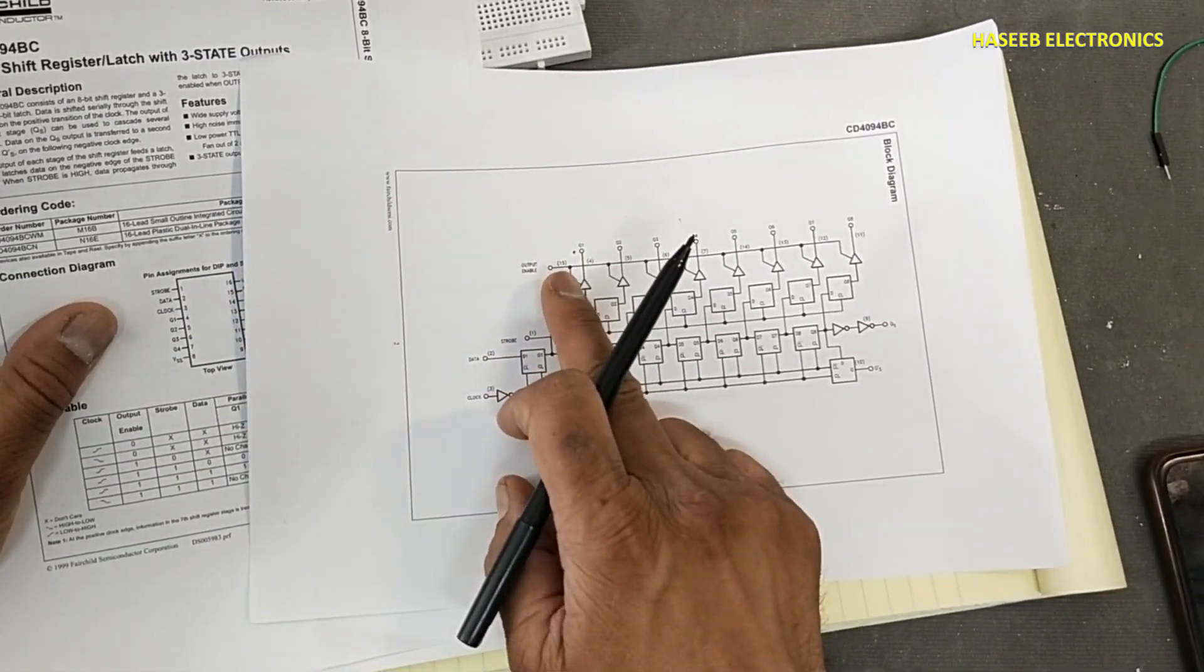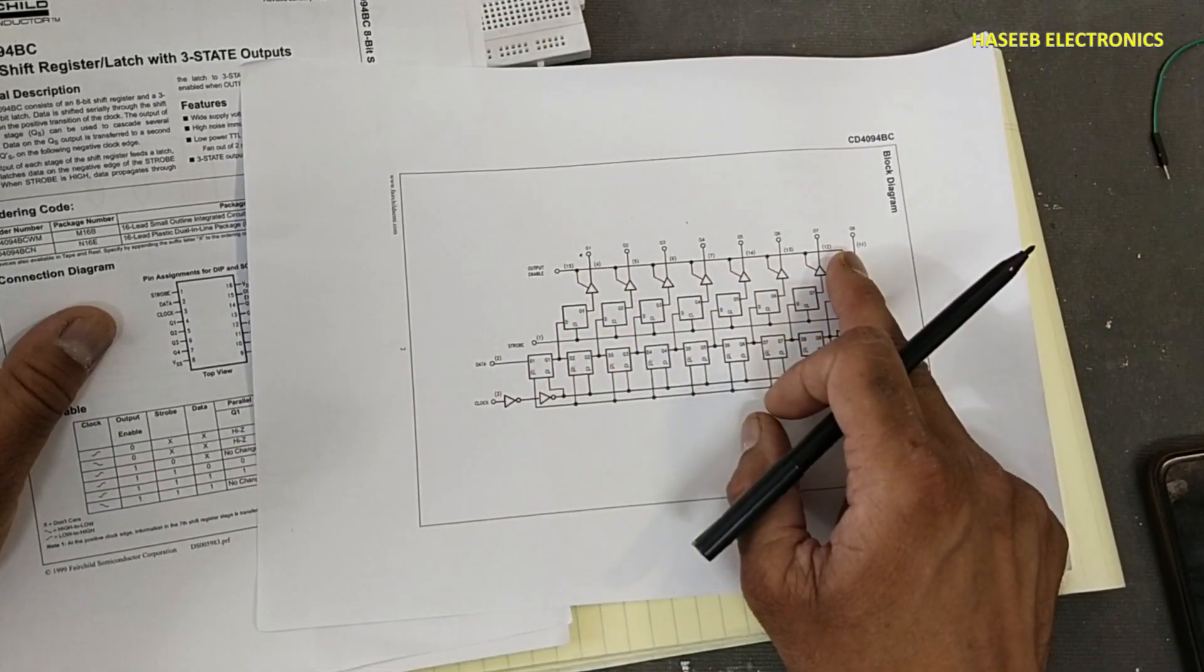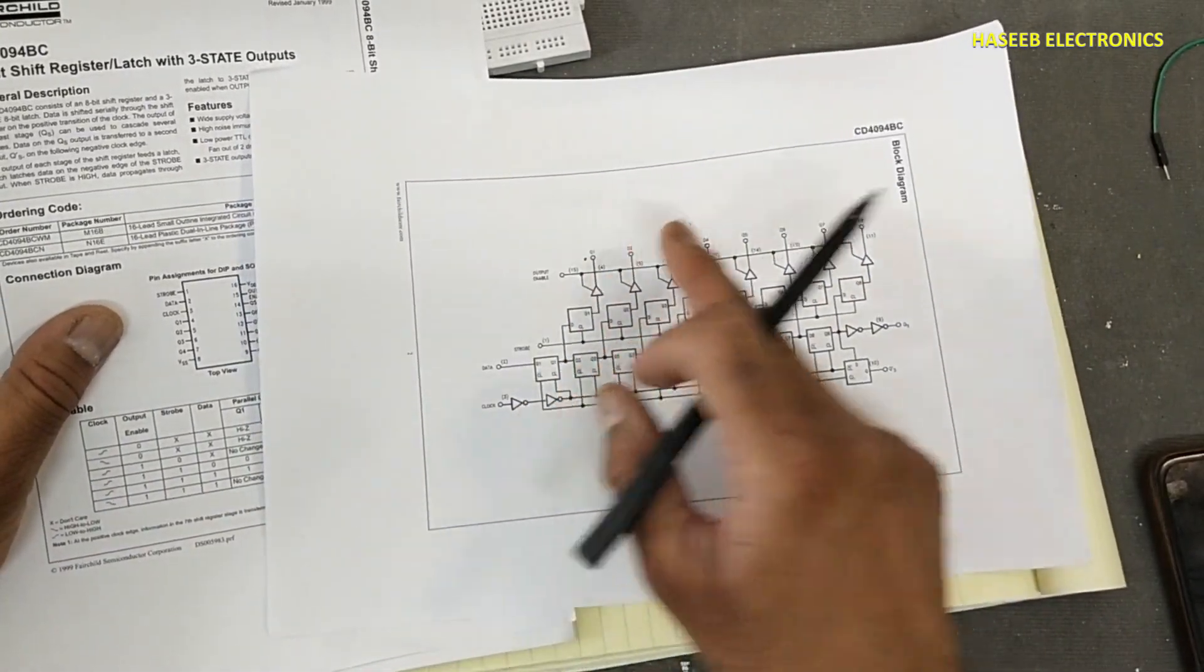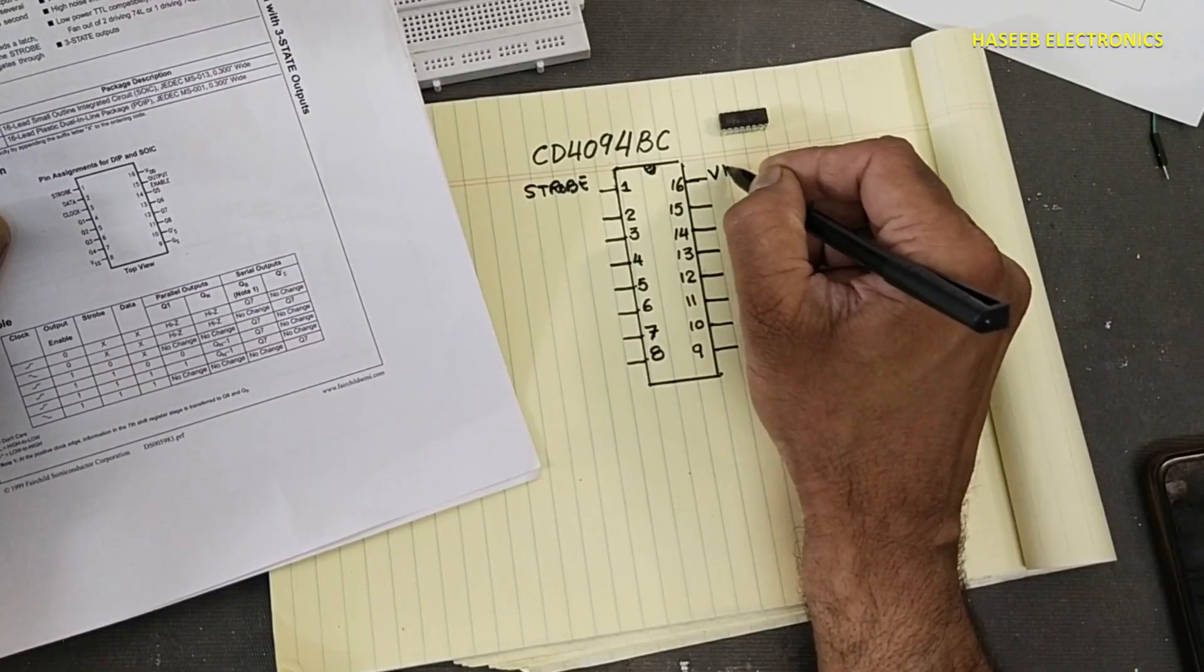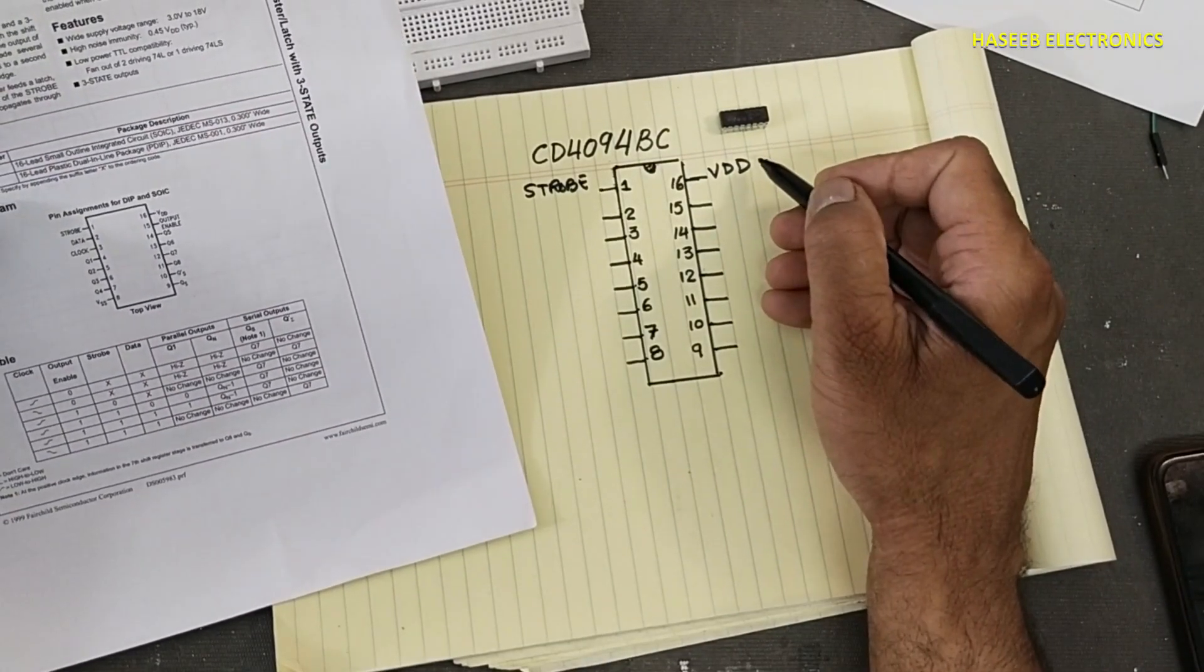So this is tri-state driver: low, high, and high impedance. VDD pin is 3 volt to 18 volt.